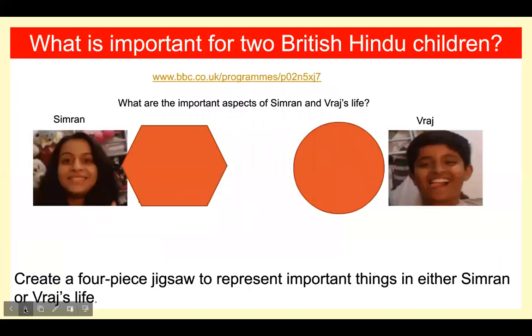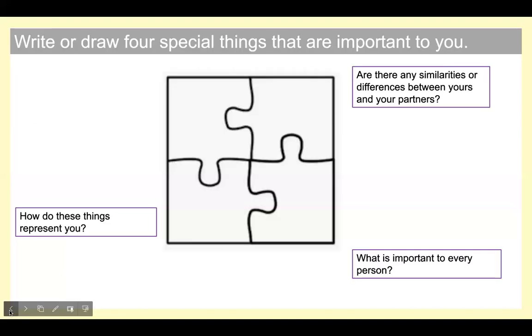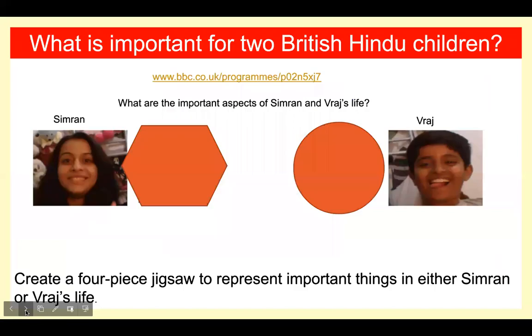Now we're going to think about what is important for two British Hindu children. We're going to look at Simran and Vraj. Once we've watched the video, you are going to create a four-piece jigsaw puzzle, just like the one you did earlier, to represent the things that are important to either of those children.